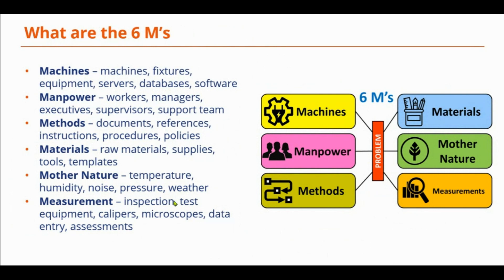And then measurement — how are the measurements that we're taking, and how can that influence our results? Sometimes the measurements are off, or we're using the wrong tool, or the tool is not calibrated correctly. And that can cause problems. So what these six M's are meant to do is help you think about and brainstorm ways in which your problem could be happening, or some of the inputs that go into each process step.